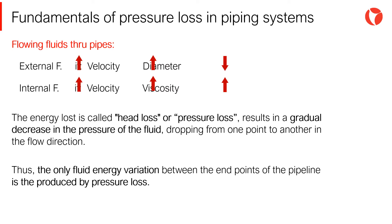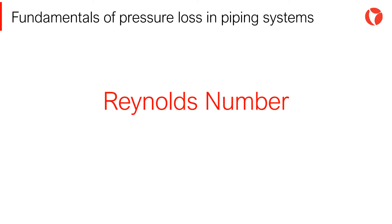Thus, the only fluid energy variation between the end points of the pipeline is that produced by pressure loss. Next, the Reynolds number and its importance will be explained.